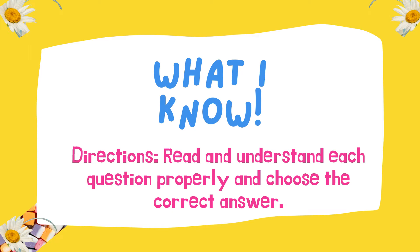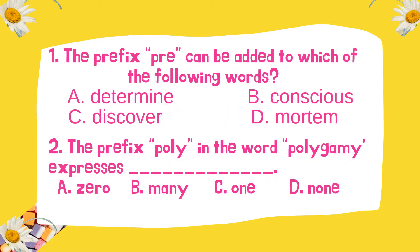Read and understand each question properly and choose the correct answer. Write your answer in your notebook. Number 1: The prefix 'pre' can be added to each of the following words. A. Determine, B. Conscious, C. Discover, D. Mortem. Number 2: The prefix 'poly' in the word 'polygamy' expresses A. Zero, B. Many, C. One, D. None.